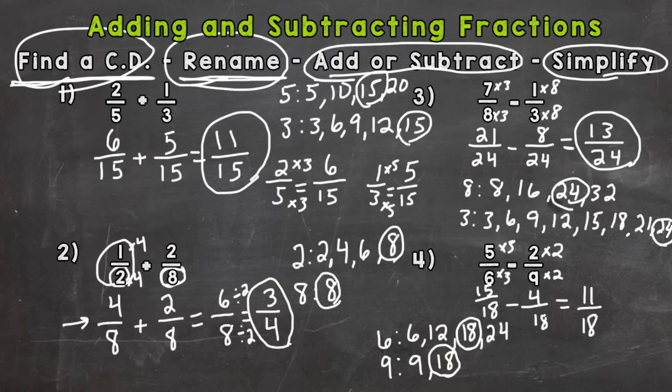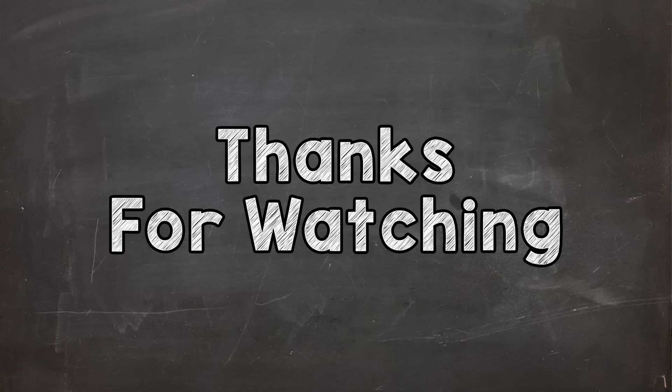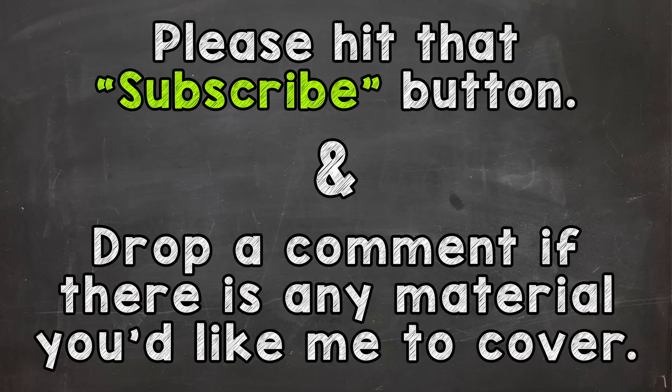Eleven eighteenths does not have any common factors besides one, so we can't break that fraction down any further. Our final answer is eleven eighteenths. So there you have it — adding and subtracting fractions. Hopefully that helped out. Thanks so much for watching, and until next time, peace.